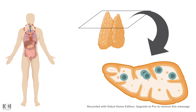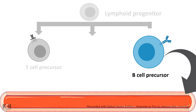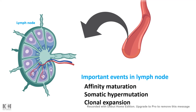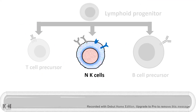After completing training in the thymus, T cells are deployed to specific base camps — basically lymph nodes. For B cell precursors, the B cell receptor recombination is not yet complete. After several rounds of changes inside the bone marrow, B cell precursors move through the bloodstream into the lymph node, where they form germinal centers. In these germinal centers, several important events take place: affinity maturation, somatic hypermutation, and clonal expansion — all leading to better B cells capable of combating pathogens.